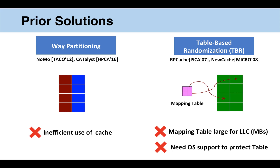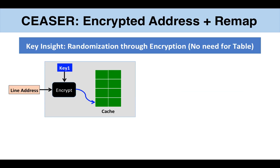We don't want any OS support. We don't want large tables. Our solution avoids both and instead uses encryption for randomization. Our solution, Caesar, takes the line address, encrypts it, and accesses the cache with the encrypted address. Lines that were previously going to the same set now get scattered throughout the cache.